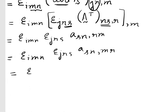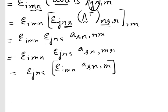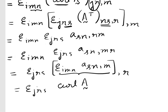Now what we do is write epsilon JRS outside, then epsilon IMN inside with A_SN comma M, then comma R. Can we do that? Differentiation M then R — I have just separated them and put a bracket, taking epsilon IMN as a scalar inside the bracket. So that is nothing but epsilon JRS, and the term within the bracket — epsilon IMN A_SN comma M — is nothing but curl A.